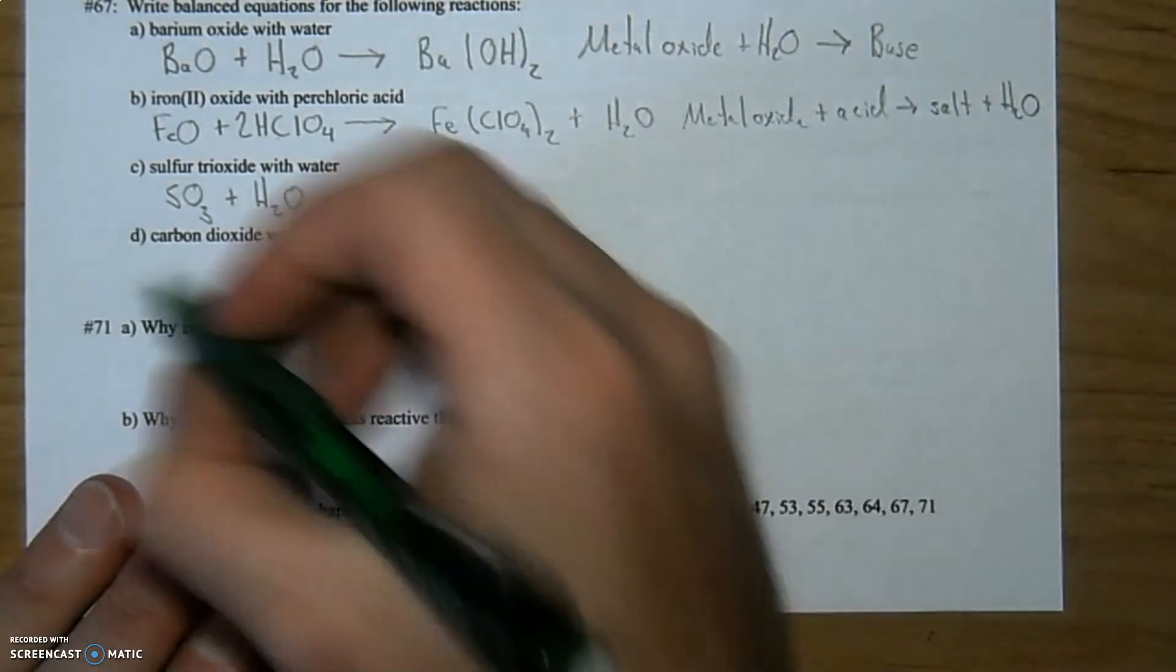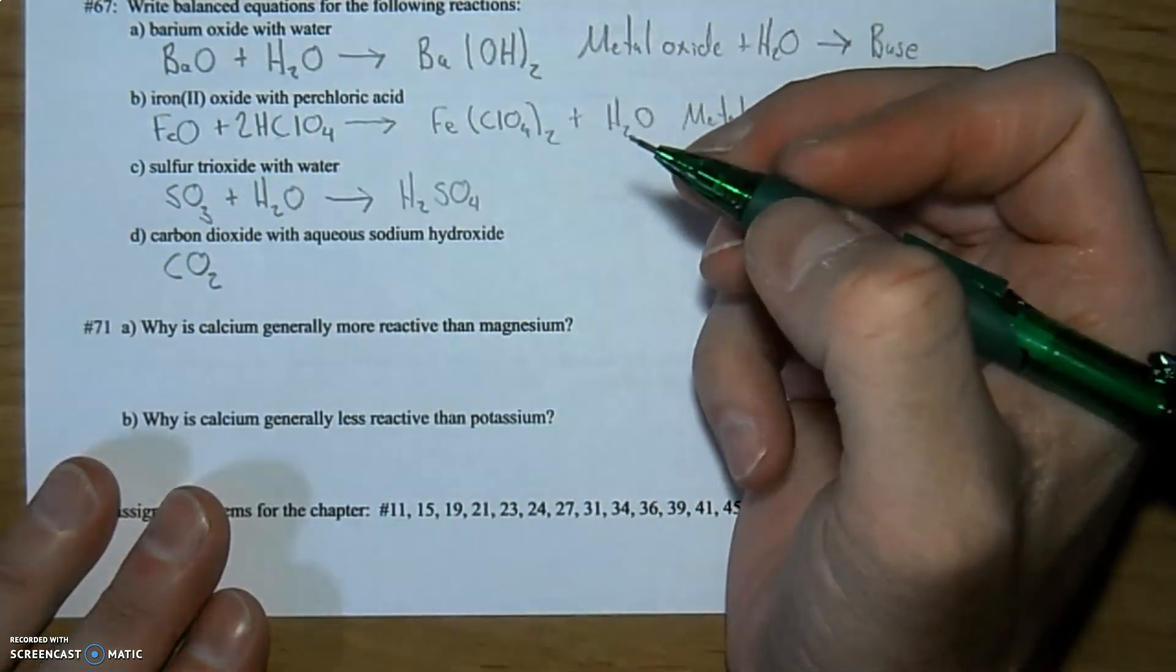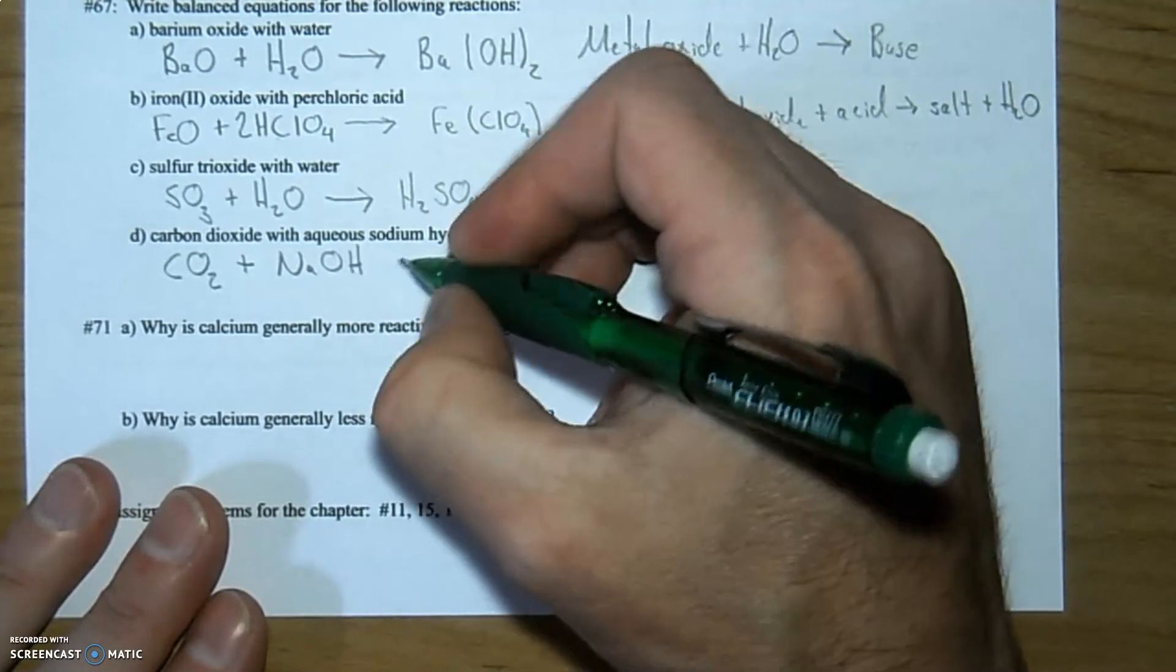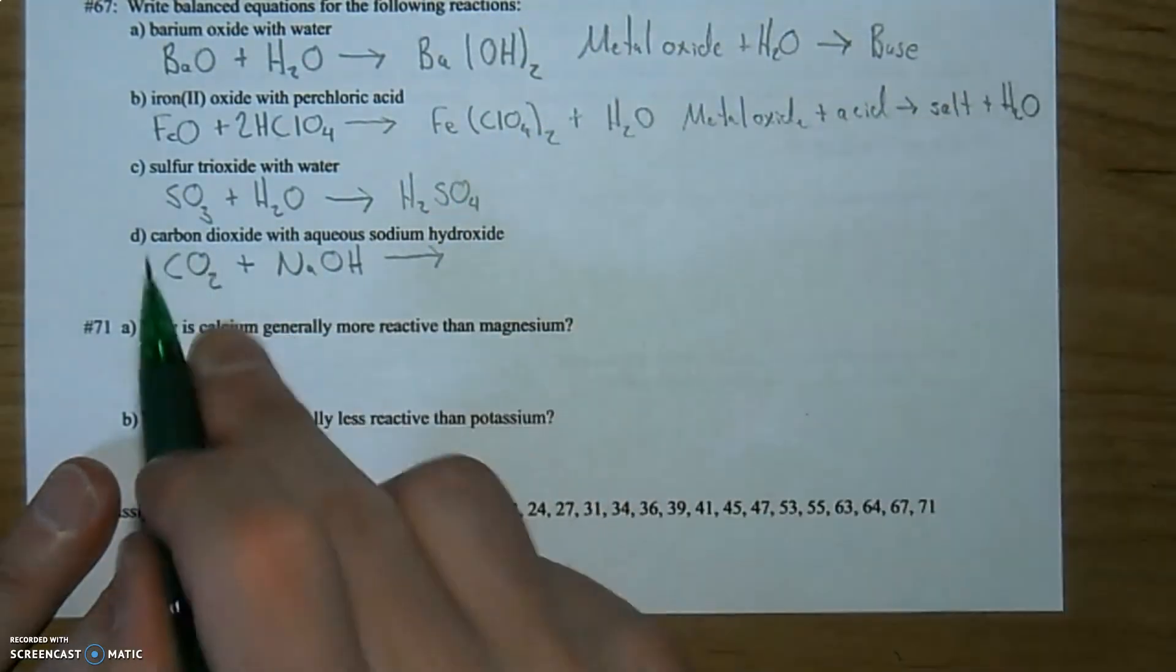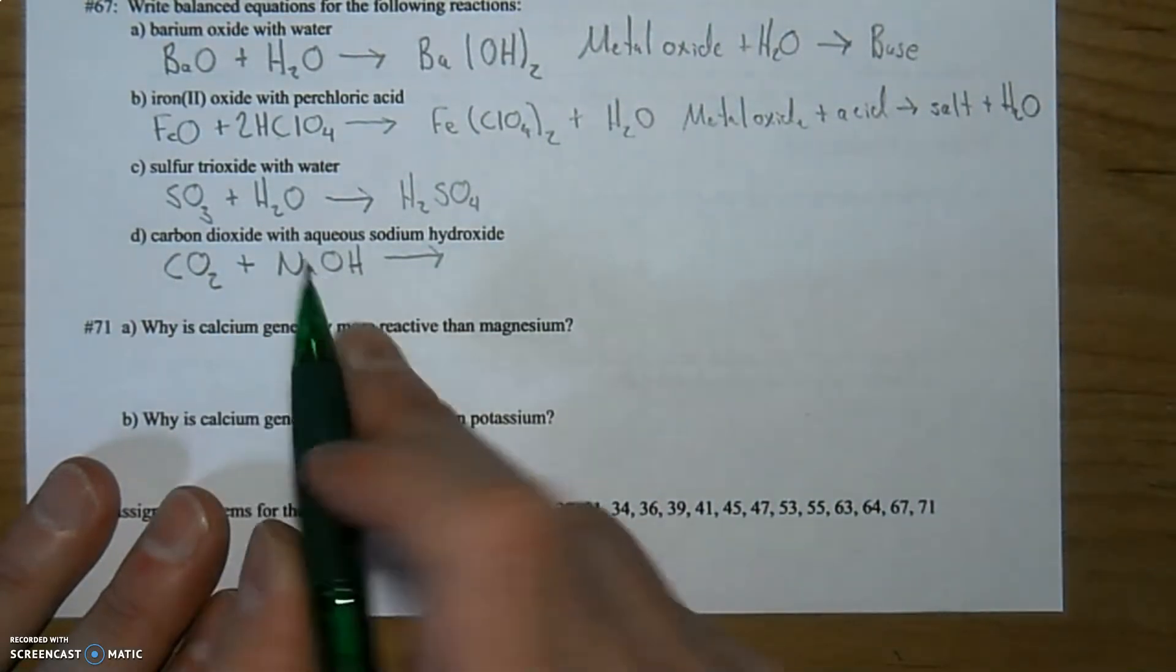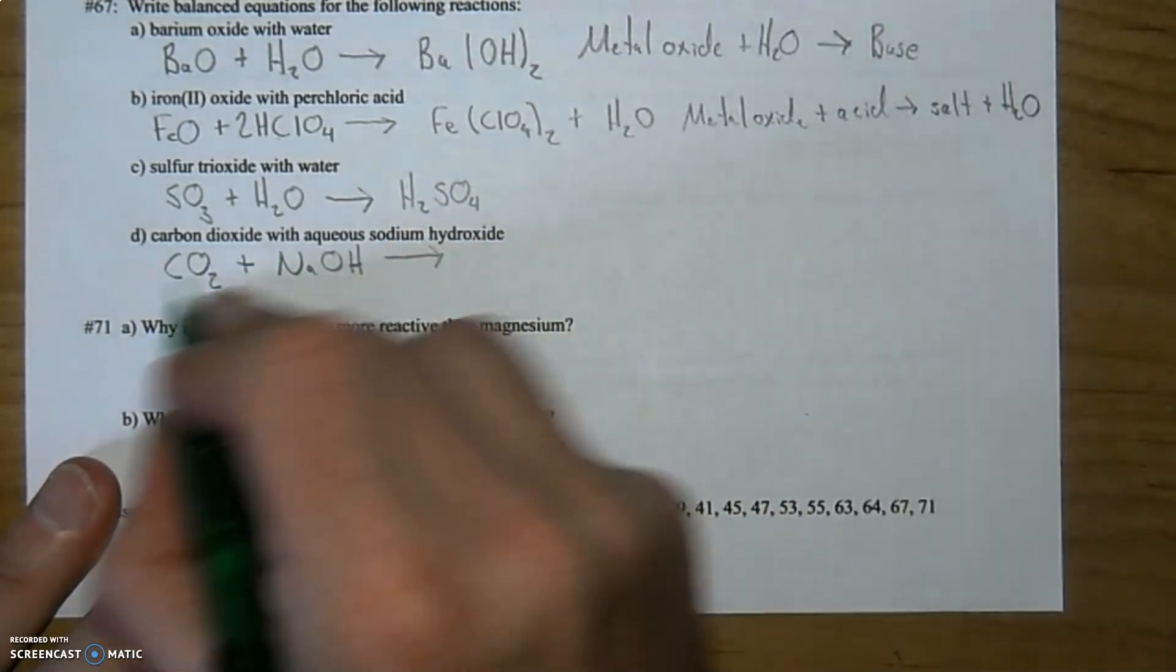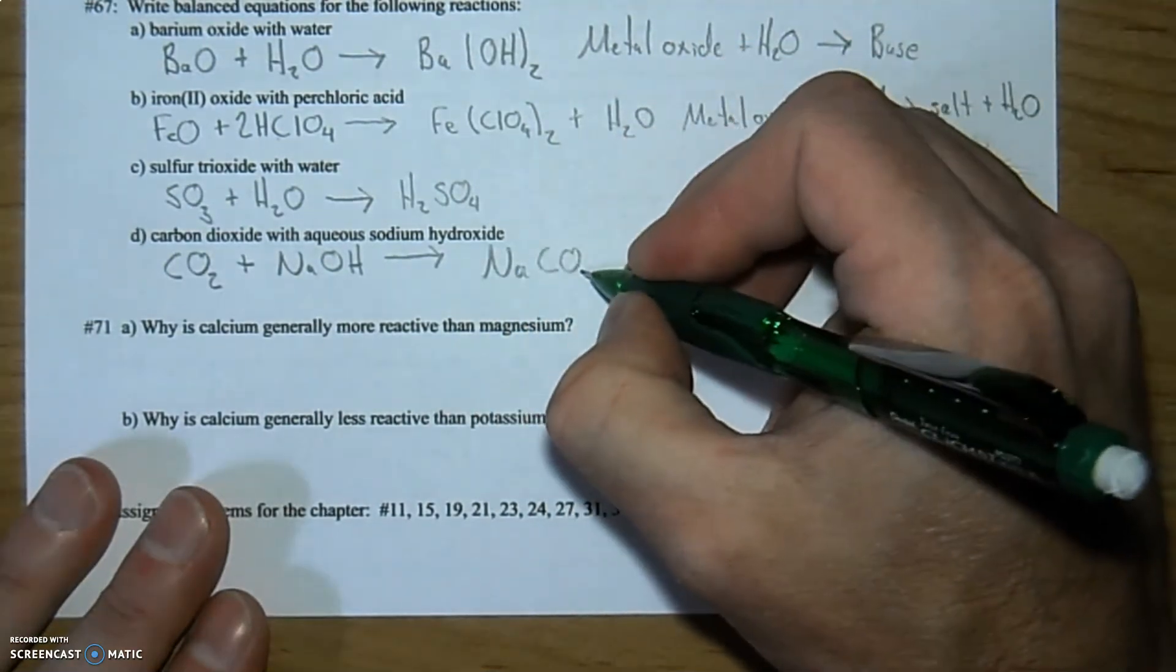All right. Carbon dioxide, non-metal oxide, with aqueous sodium hydroxide, which is definitely a base. And it plays together. So something that should be acidic and something that's basic. Same idea. You're going to get salt and water. So I'm going to start with the sodium thing. And the sodium is going to match up over here.